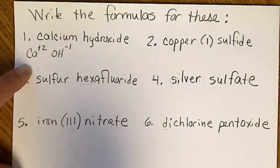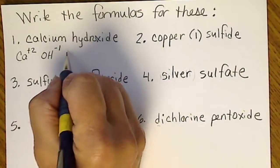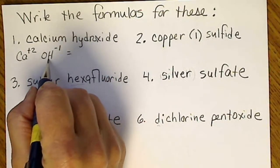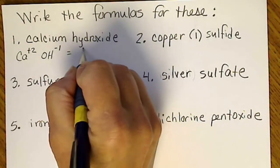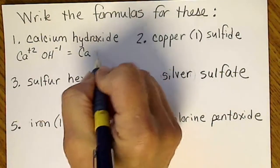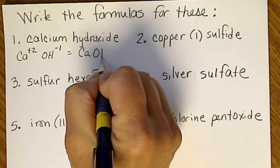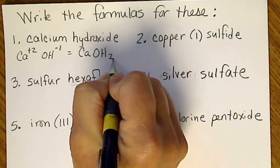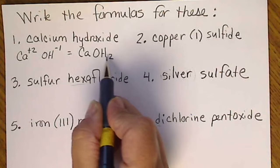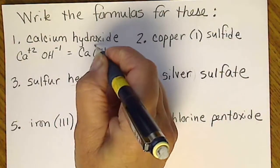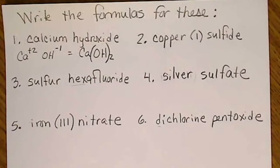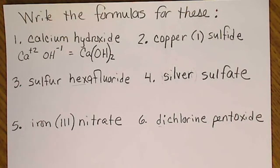So that does not cancel to zero, so we need two hydroxides for every one calcium. If we write calcium hydroxide without the parentheses, then that's incorrect because we need two of this group called hydroxide. Now the charge cancels to zero, so this would be the formula for calcium hydroxide.